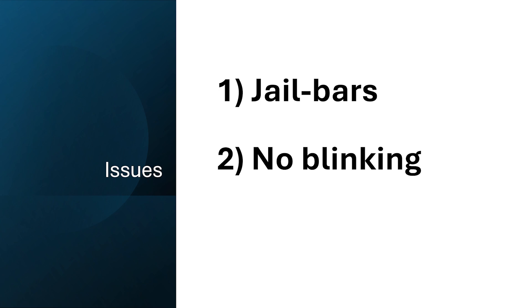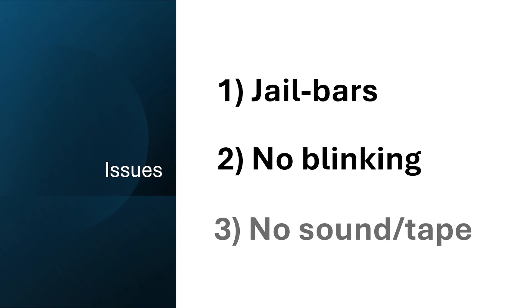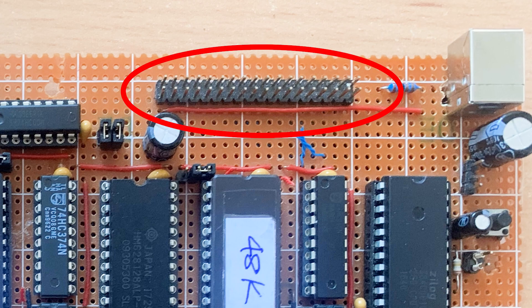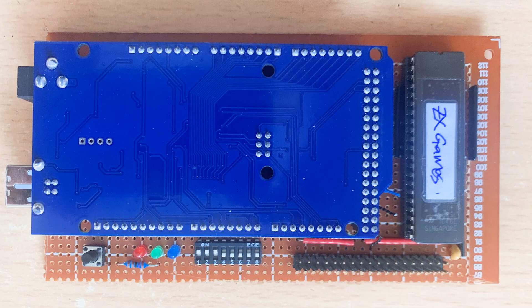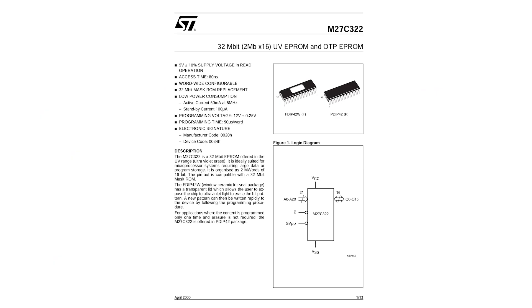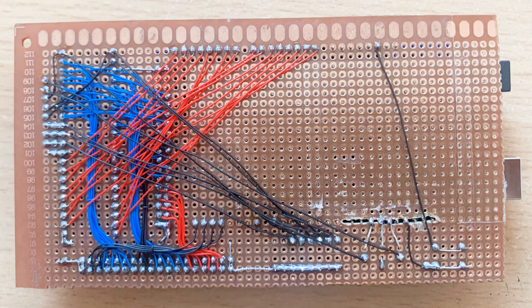Second, I haven't connected up the flash bit in the attribute byte, but that should be pretty straightforward. Finally, I haven't connected up the speaker or the cassette tape interface. To download games, I built an interface board which has an Arduino Mega and a large EEPROM, specifically the 27C322. Every game is just a 64-kilobyte memory image of the Spectrum main memory, so on this particular EEPROM I can store 64 games — that should be enough for now.